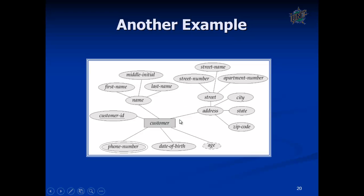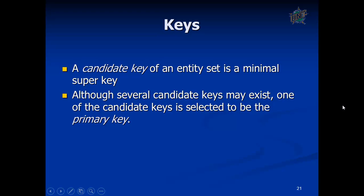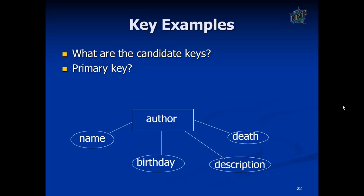An example ER diagram of a customer entity: customer has phone number, date of birth, age (which is a derived attribute), customer ID, and address. Address can be city, state, zip code, and street (street name, street number, apartment). Customer name can be first name, last name, and middle initial. The primary key identifies the entity — the candidate keys are those which can serve as primary key, and primary key is the unique identifier on the basis of which you can uniquely identify different entities.